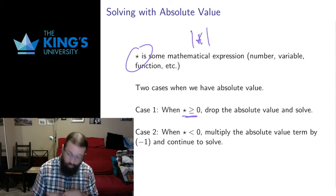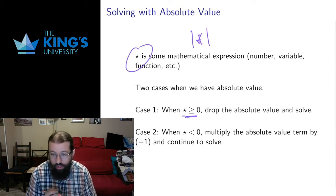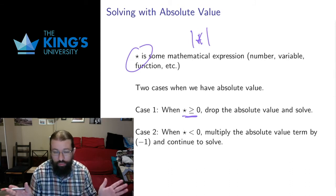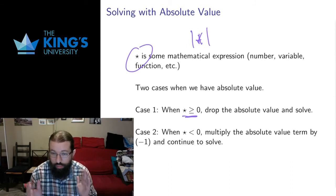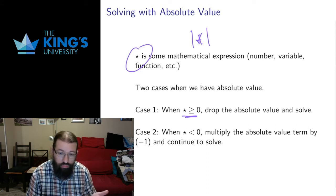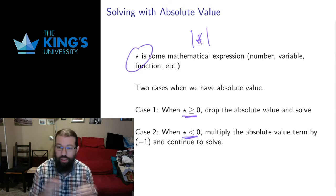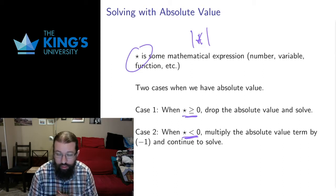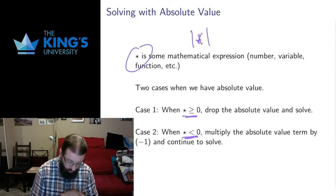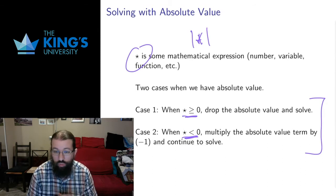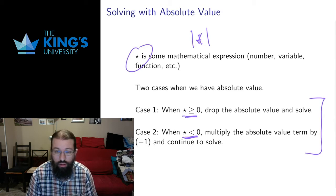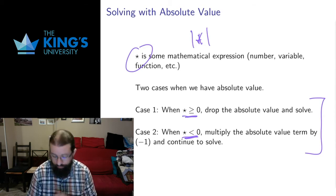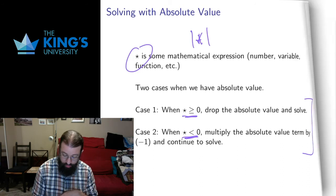In the first case, I assume whatever is inside the absolute value is positive, including 0. And then I can just drop the absolute value and keep going. If it's positive, the absolute value does nothing, so I can ignore it. In the second case, if whatever this thing inside the absolute value is negative, then I need to multiply by negative 1, because that's what I do to make negative things positive. So I multiply by negative 1 and then I continue to solve. I have to solve in these two cases, work with both cases, look at the results of both cases, and put them together. Let's look at some examples to see how this works out.